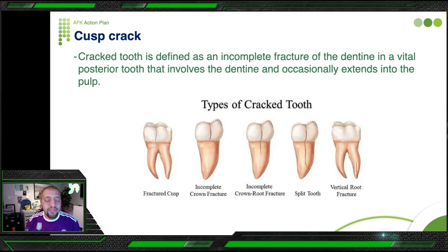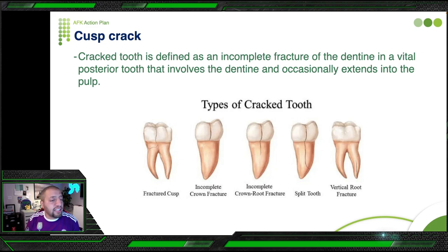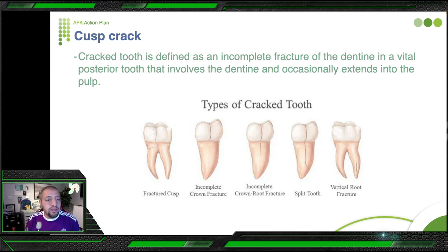Lastly, there is vertical root fracture — you cannot see it frequently, and it can be managed with the patient not complaining much. But the first three types are really painful and the patient can feel them. So for fractured cusp, as we see in this question, let's discuss how you are going to deal with it.